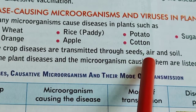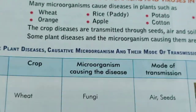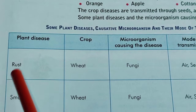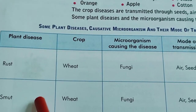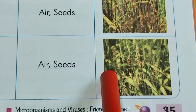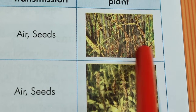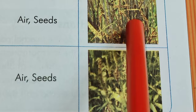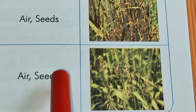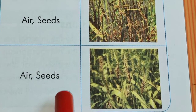Diseases may be seed-borne, air-borne, or soil-borne. In the following table we can see some examples of plant diseases. First, there are rust and smut diseases of wheat. These are fungal diseases which affect the stem and leaf portions of the plant severely. Due to rust and smut, the internal tissues of the plants get completely spoiled.